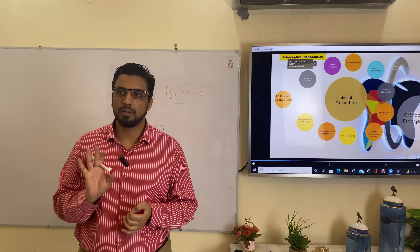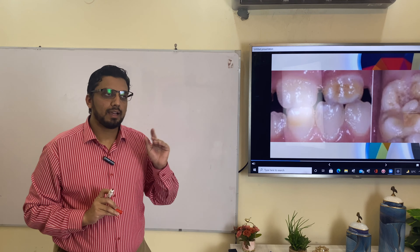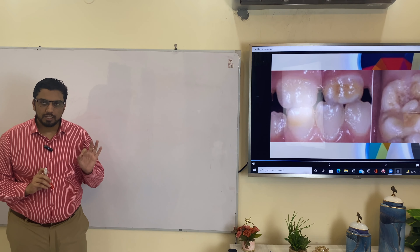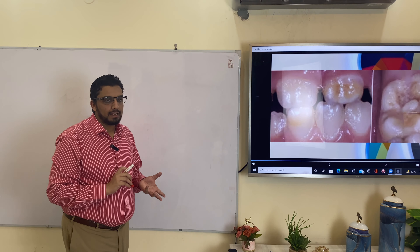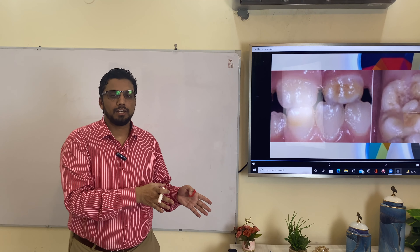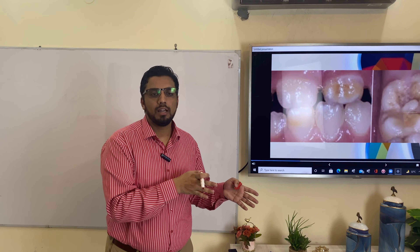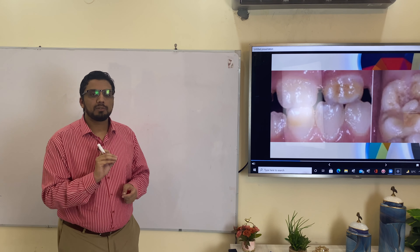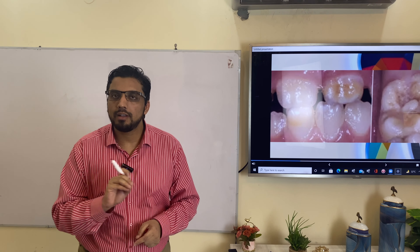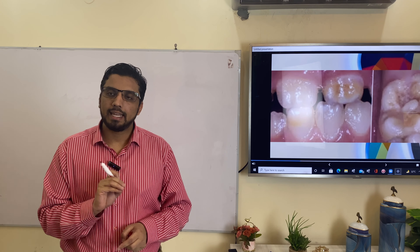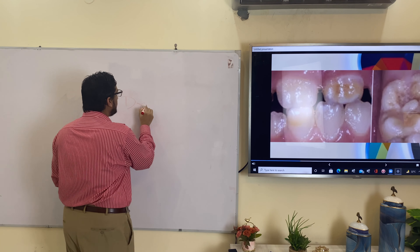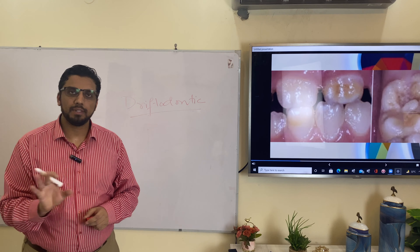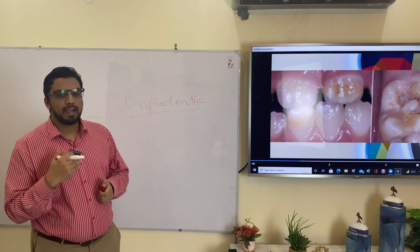Because of poor oral hygiene and early eruption of the first permanent molar, pathology such as molar incisor hypoplasia is very common. We can plan the extraction of this first permanent molar and allow the adjacent second permanent molar to come into its position. After a few years, nobody would be able to tell there was a first permanent molar — no orthodontics, just driftodontics.